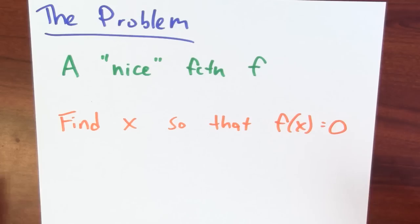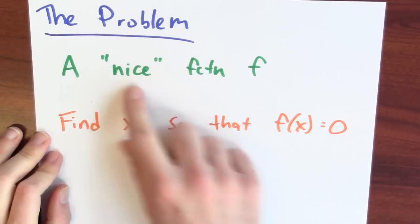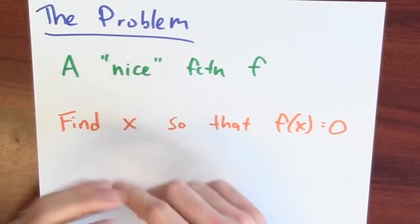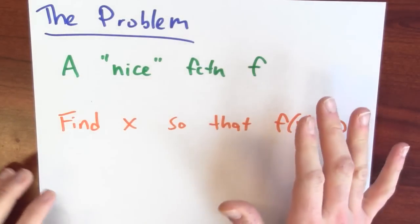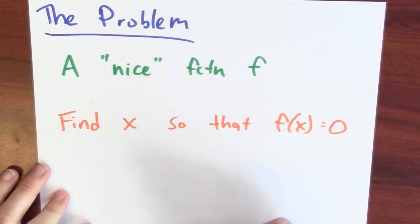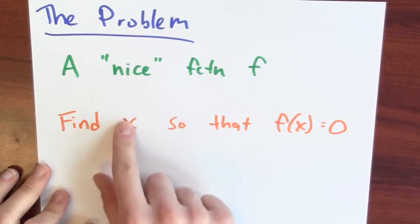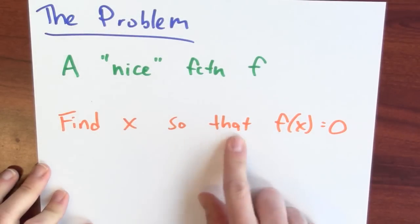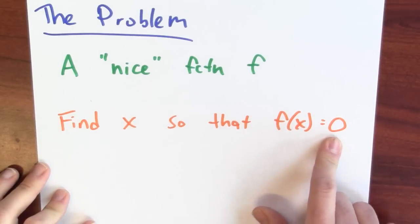I often want to find approximate roots. Here's the setup: I start with some nice function f — nice might mean differentiable, maybe the derivative is continuous, a reasonable function. And then I want to find some input x so that the function evaluated at that input is equal to 0.